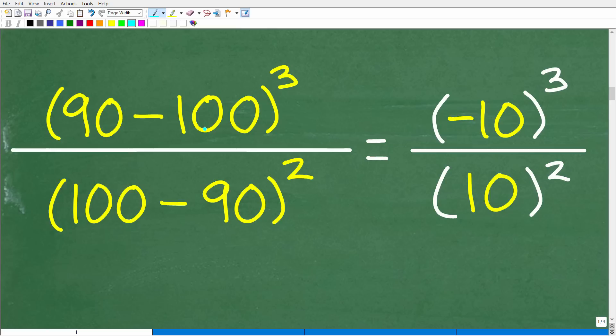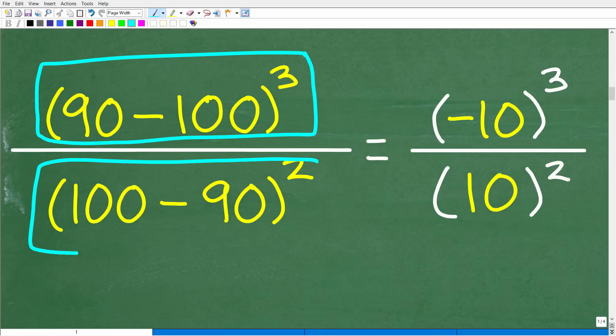So 90 minus 100, we have to do what's inside parentheses now. And another kind of thing about the order of operations, when you have a fraction, you can kind of think of the numerator and the denominator as kind of independent little problems.